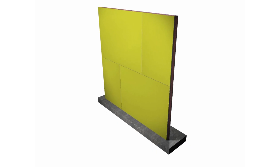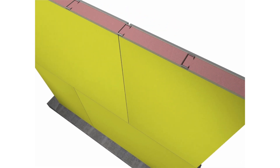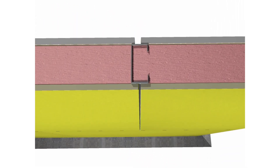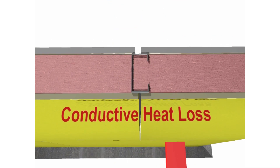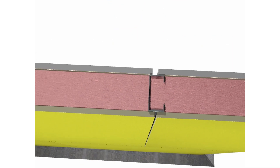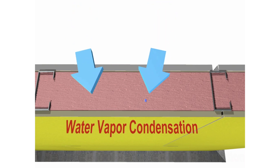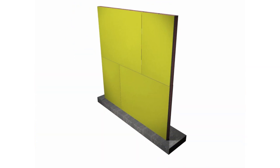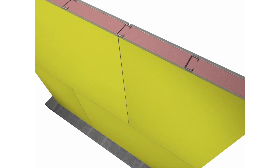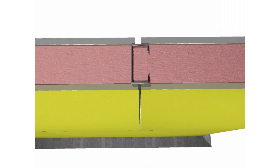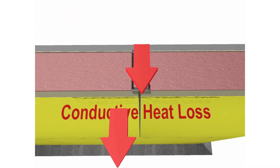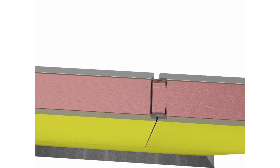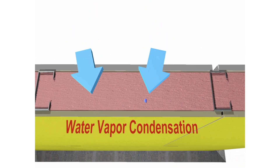As shown here, when insulation is only placed between the studs, the steel serves as a thermal short circuit, allowing heat to move around the cavity insulation very quickly. This ultimately causes a thermal bridge and is a major concern because it can drastically reduce the thermal performance of the insulation placed between studs, which can contribute to building energy loss and potential condensation issues.